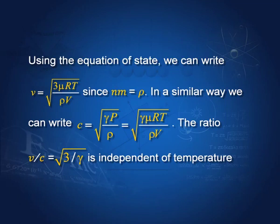Using the equation of state pV equals RT, we write C as square root of gamma μRT by rho V. Taking the ratio v by C, you can see that this ratio is independent of temperature.